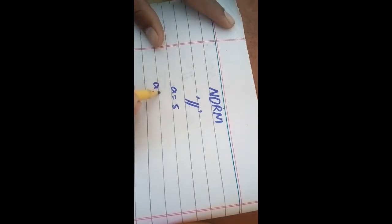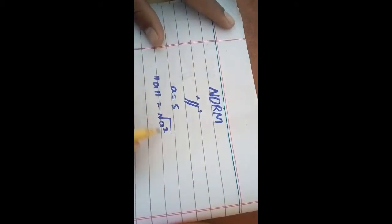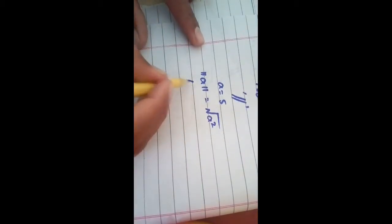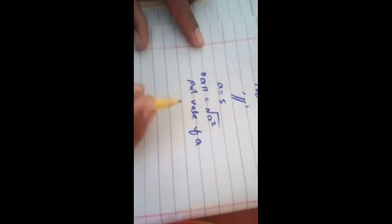a like this, a in a norm symbols, and in this side a square and under root. So this is a formula that is used to find a norm of any value. Okay, now put value of a, so after